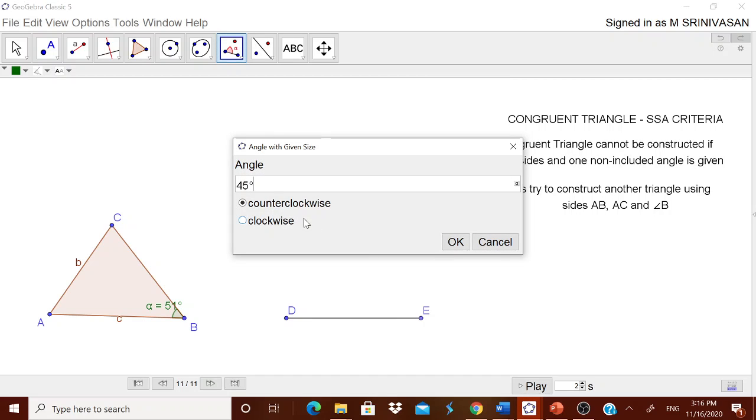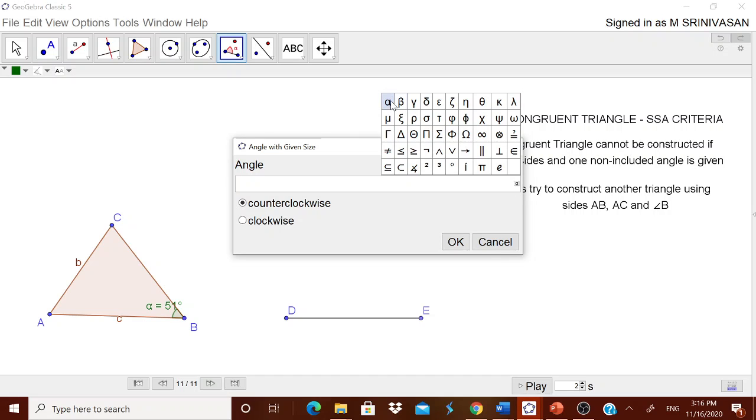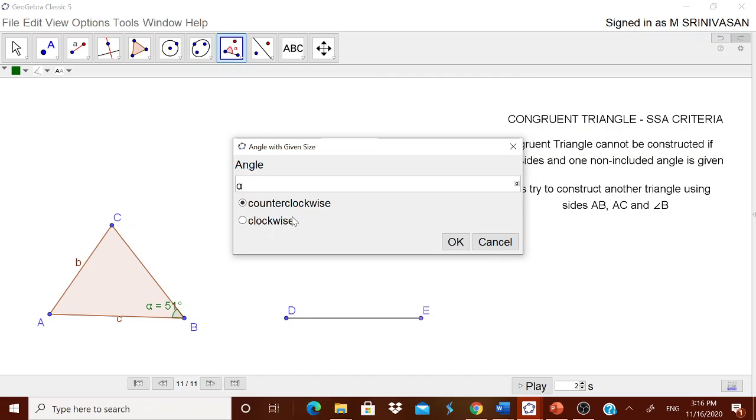Touch this D, touch this E. Immediately ask what angle you want. Delete it, go from this, take alpha, alpha, and then do clockwise, that is okay.